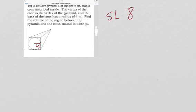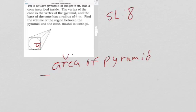So what we have to do is find the volume of the pyramid and subtract the volume of the cone. And that will tell us the volume of the space between them.